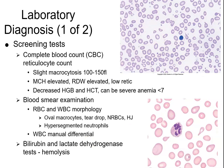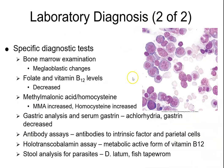The LDH will be elevated, coming from the lysed red cells themselves. On bone marrow exam, you'll see megaloblastic changes with hypocellularity — decreased numbers of cells. B12 and/or folate levels will be decreased. Methylmalonic acid may be increased and homocysteine may be increased, depending on whether it's a B12 deficiency.